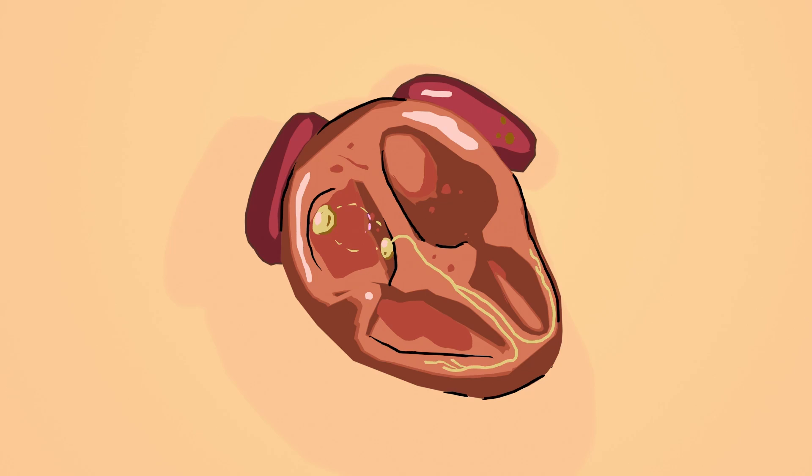Here we see a re-entry loop between the sinus node and the AV node in the atrium. If the loop only involves one chamber of the heart then it's called a local re-entry. In this case since it involves the atrium it's known as a supraventricular tachycardia.